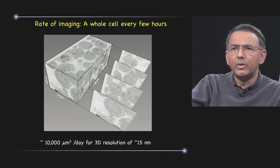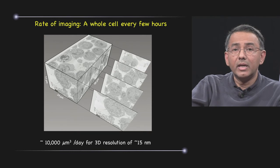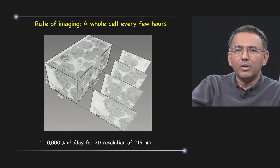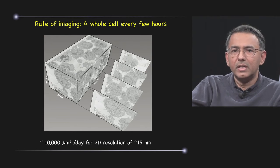sometimes weeks to get a single 3D map, we are now at a point where we can actually imagine an entire mammalian cell in a few hours. And this type of speed is likely to be important in both the statistical sense and also learning more about the nature of variation among different cell populations.